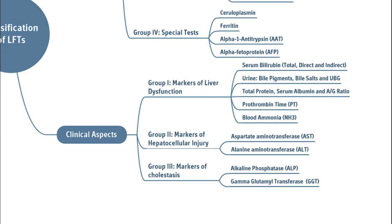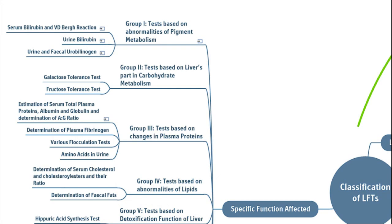Based on clinical aspects there is a classification with three groups: Group 1 — markers of liver dysfunction (bilirubin, bile pigments in urine, total protein, albumin, prothrombin time, blood ammonia); Group 2 — markers of hepatocellular injury (AST, ALT increased); Group 3 — markers of cholestasis (ALP and gamma glutamyl transferase). The tests are the same, only the groupings differ.